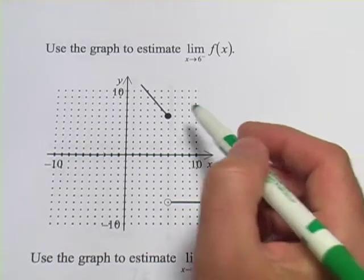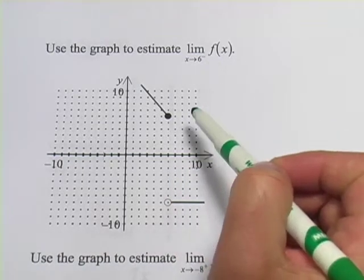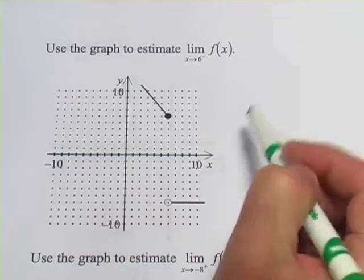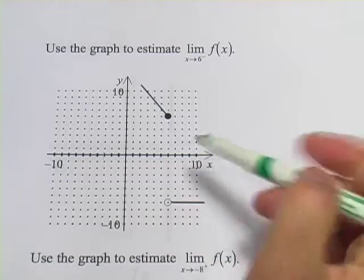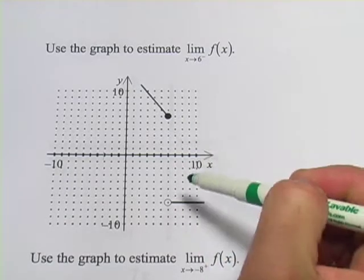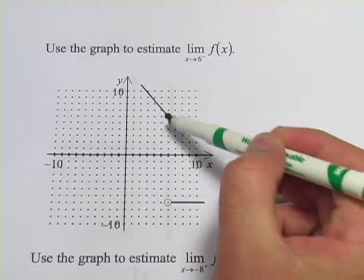In this case, we're looking at the value that the function approaches as x approaches from either the left or from the right, because in some functions, for example this one, you might have what's called a discontinuity, where at a certain point it breaks.